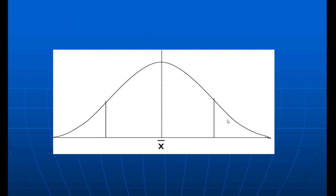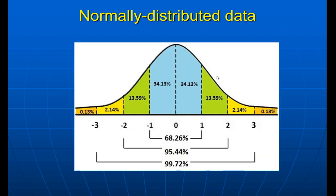I want you to understand that we have three standard deviations on this curve. We divide the curve into three standard deviations. Keep in mind: 68% of the data is within one standard deviation, nearly 95% within two standard deviations, and nearly 99% within three standard deviations. Keep those numbers in mind.